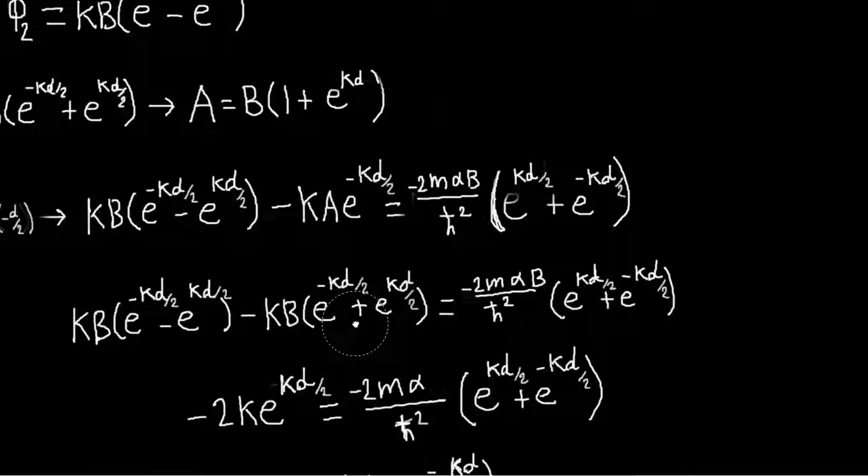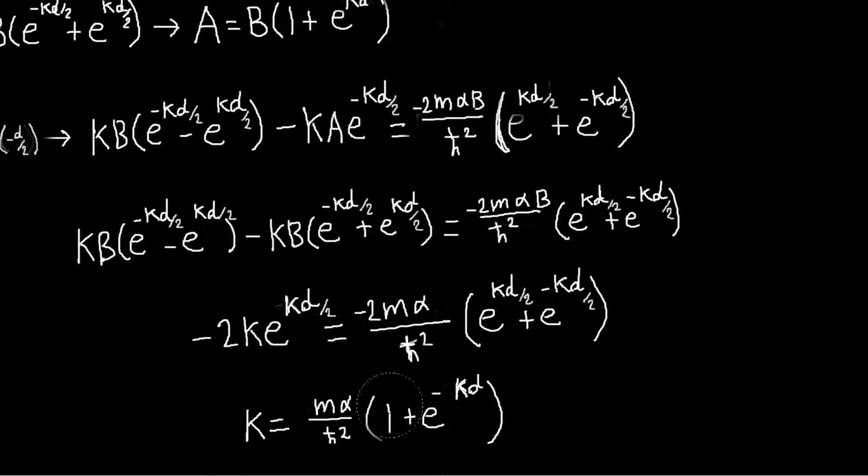And then after a little bit of math to simplify things, you will get to this equation. And so this is our equation for our eigenenergies. So it's another transcendental equation, just like we found for the finite square well. So you'd have to solve this either numerically or graphically to get the eigenvalues.